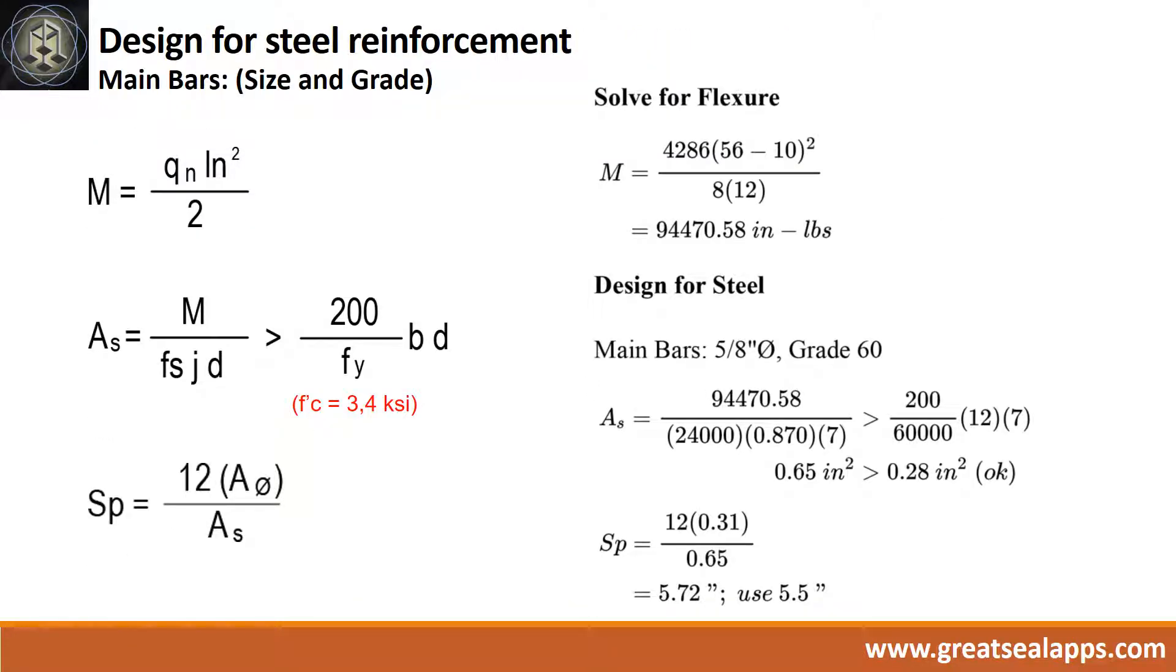Given footing width of 56 inches, 10 inches thick concrete wall, and net soil pressure of 4,286 PSF. The moment is 94,470.58 inch pounds. The area of steel is 0.65 square inch, and the spacing for 5/8 inch diameter bar is 5.5 inches.